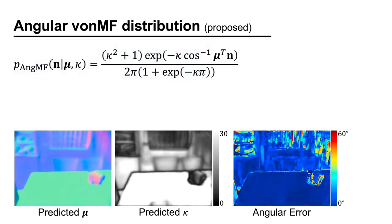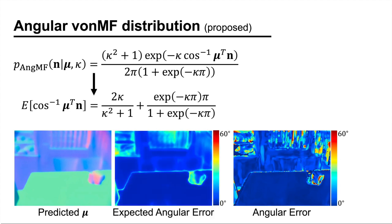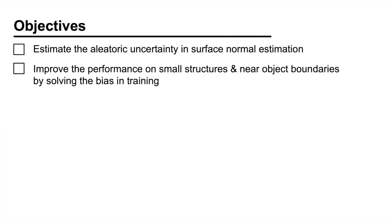Lastly, since kappa represents the confidence, we calculate the expected value of the angular error and use it as a measure of uncertainty. So, we are now able to estimate the aleatoric uncertainty. The remaining challenge is to improve the performance on small structures and near-object boundaries.